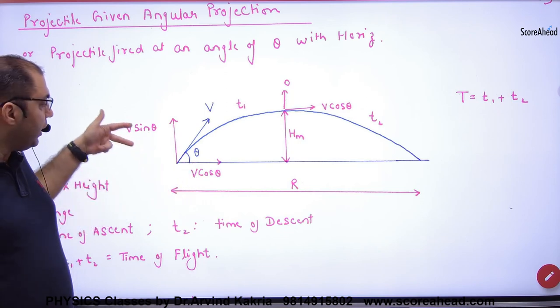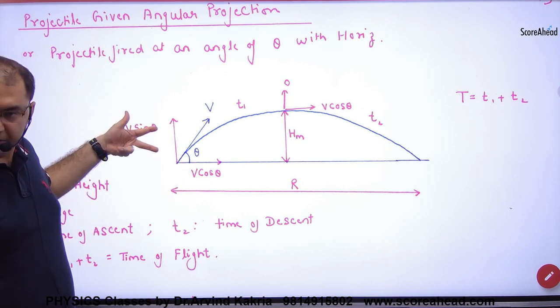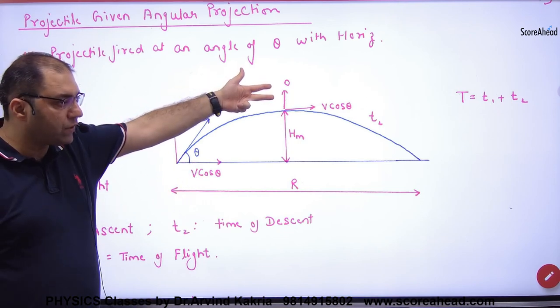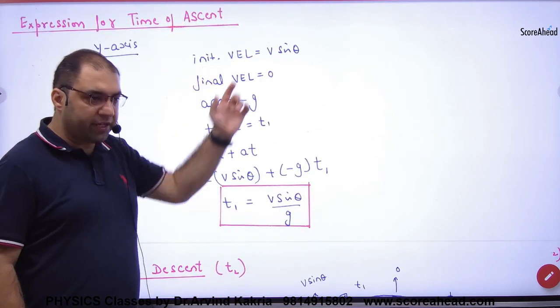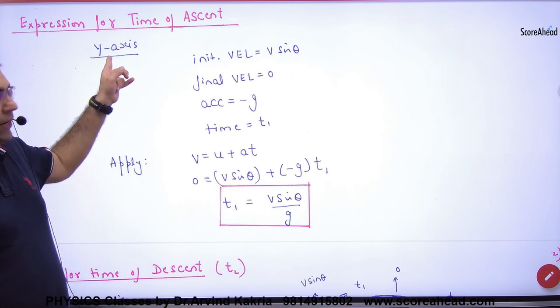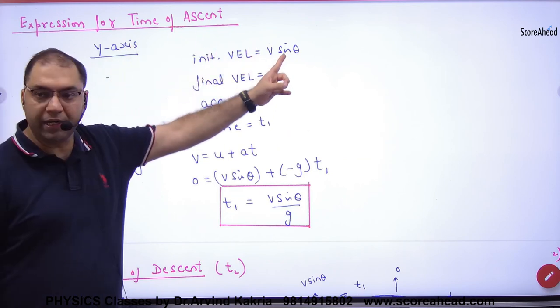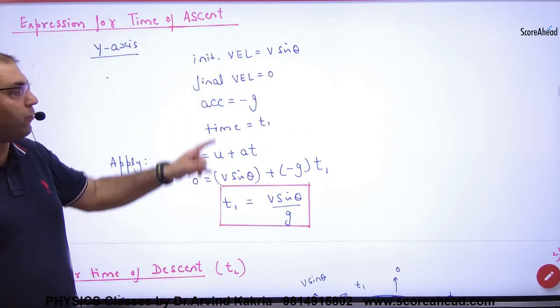When the body was here in the y axis, initial vertical velocity is v sin theta, final velocity is 0. At the topmost point, the final velocity is 0.